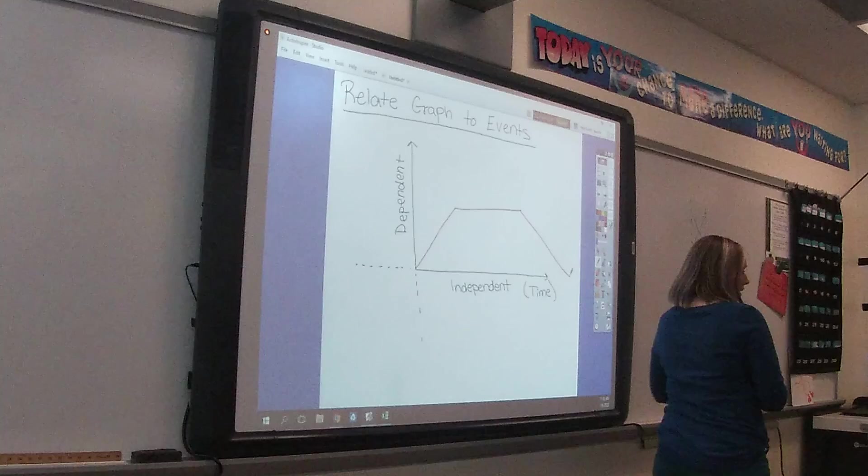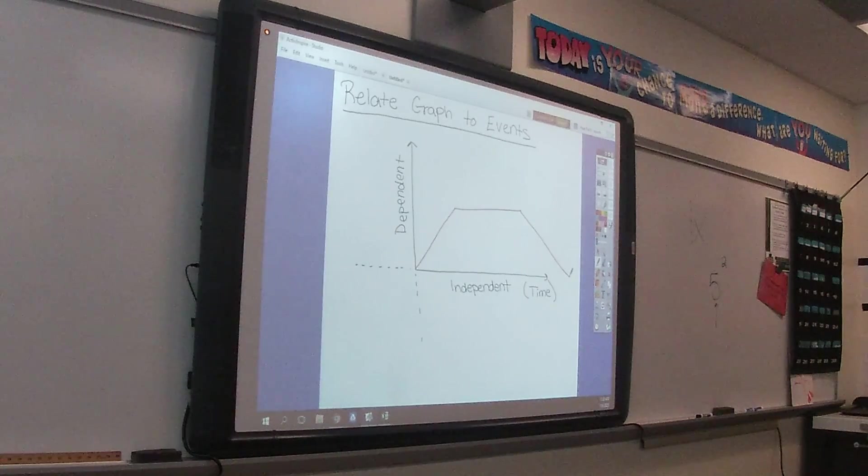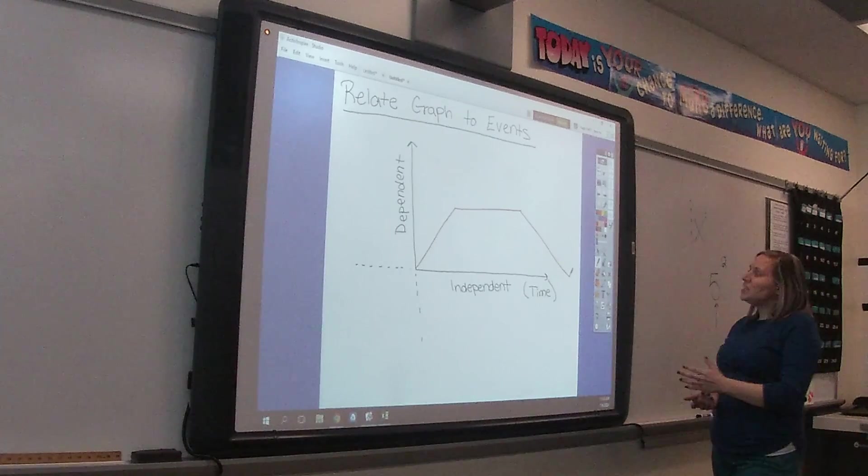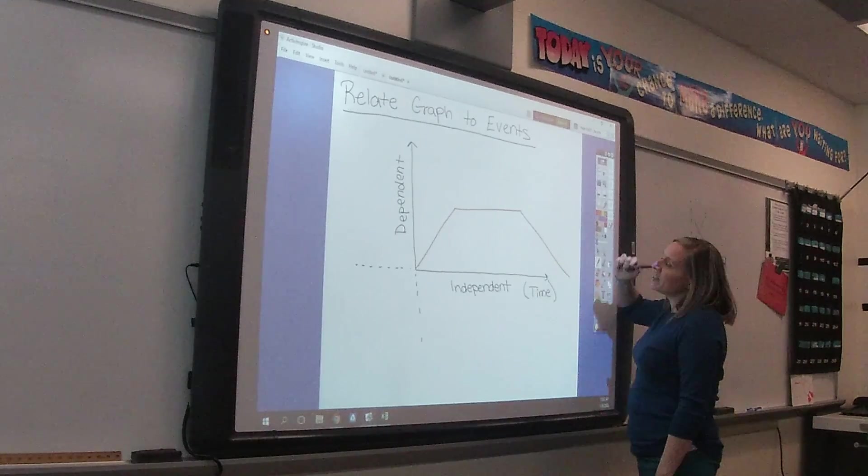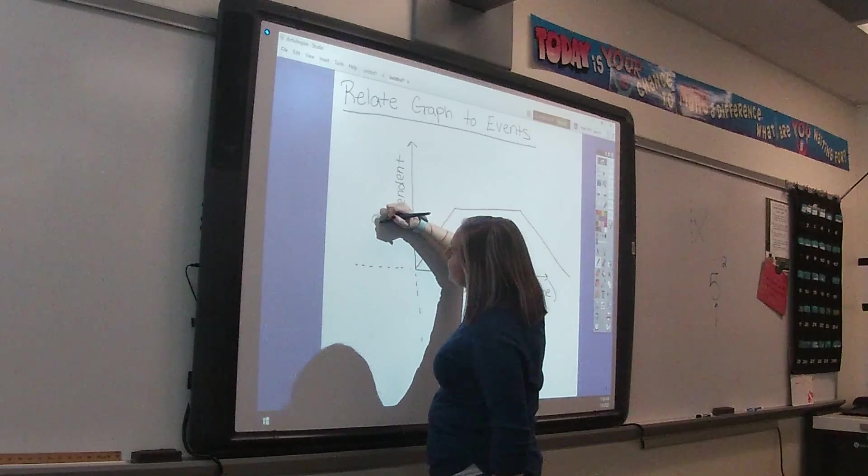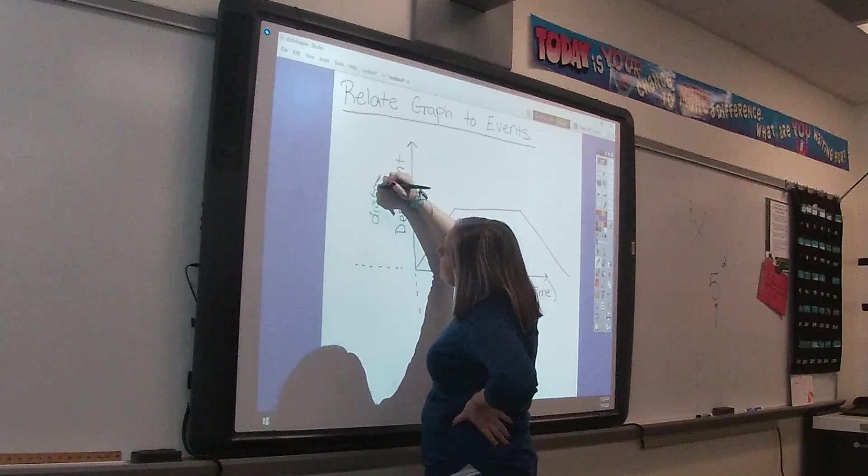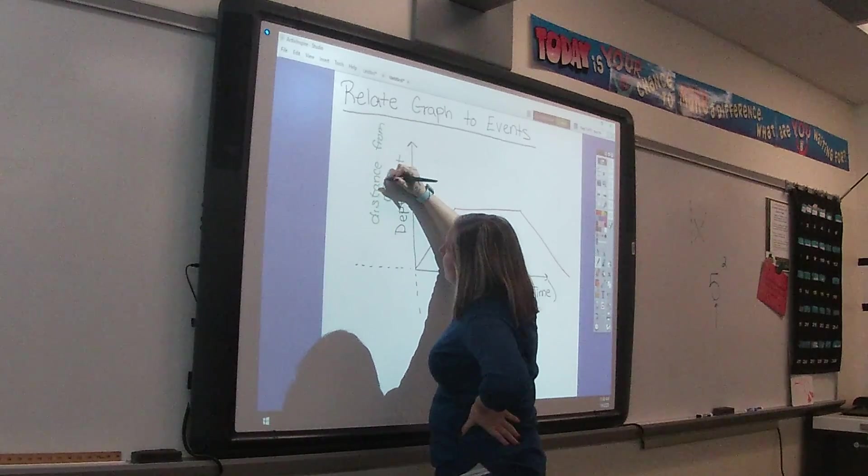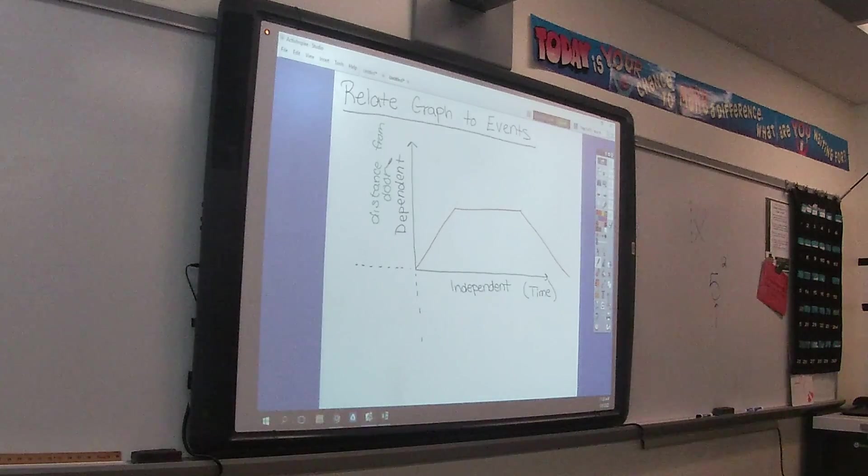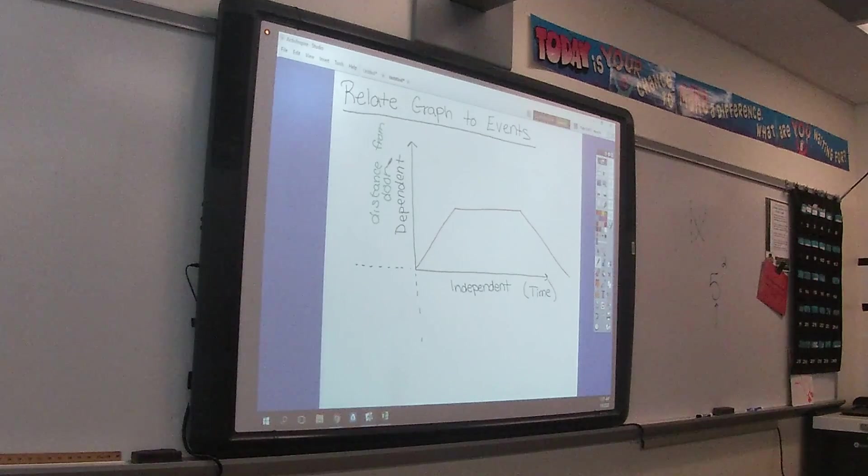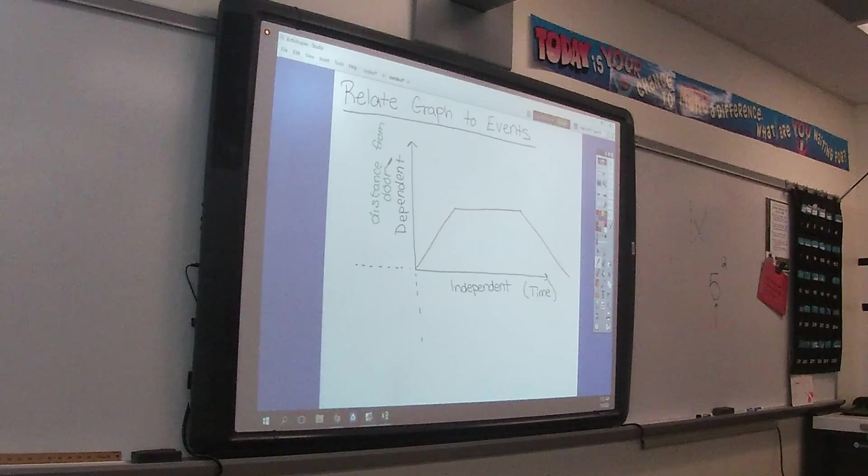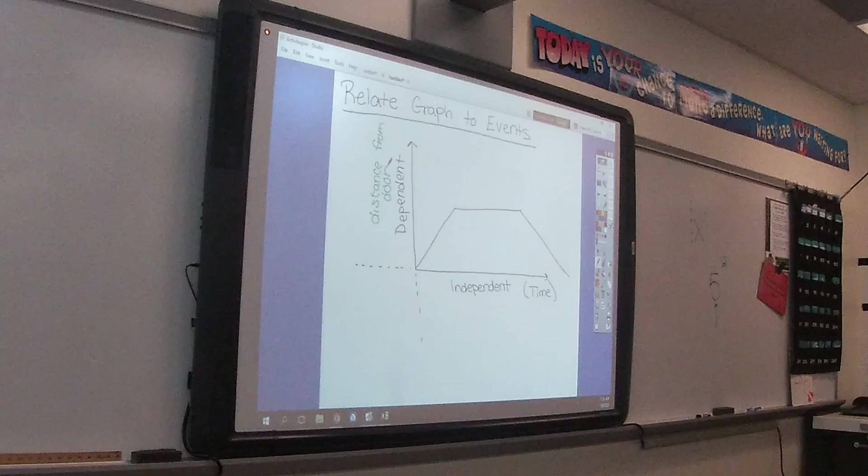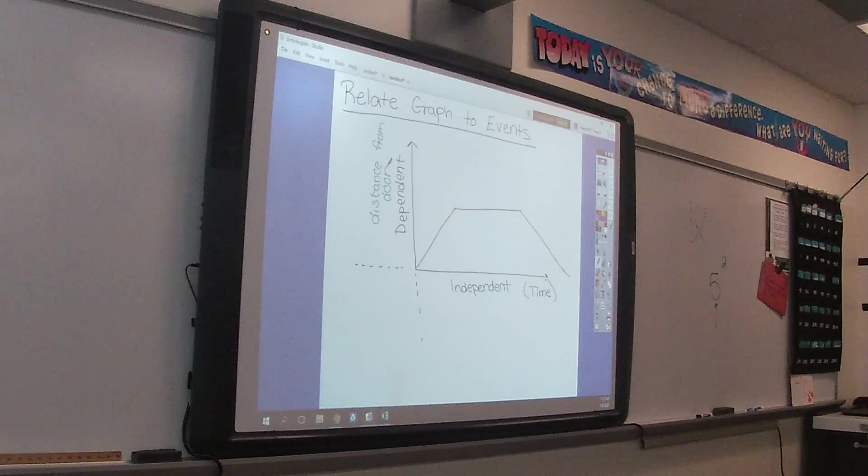You have looked at these before and you look at graphs that do things like this. Pretend that that's a straight line across. Let's say that our independent variable is going to be time, and let's say that our dependent variable is going to be distance from door. You don't even necessarily need to write this label in. So I'm going to talk about my distance from the door. What is the first thing that's happening in this graph?